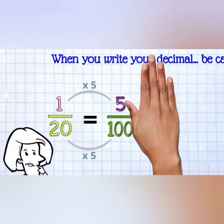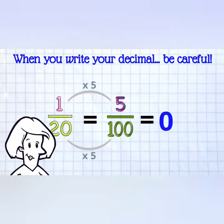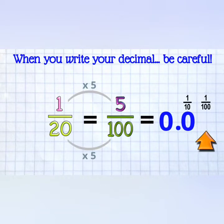When you write your decimal, be careful! There are no whole numbers, so zero, then decimal point. Now take care! The first decimal place is tenths. We don't have any tenths, so we put a zero to show that. Then we've got the hundredths place, and that's where we put our 5. We see that 1 twentieth equals 0.05.